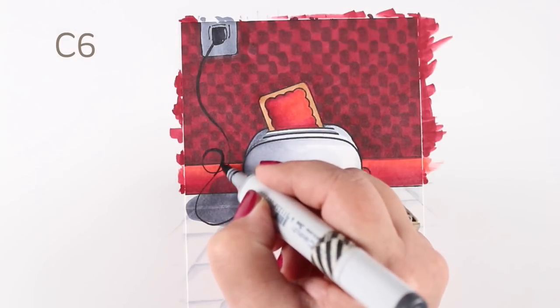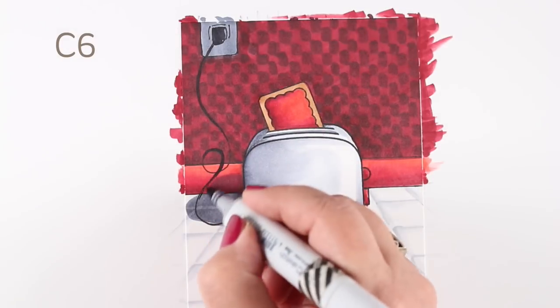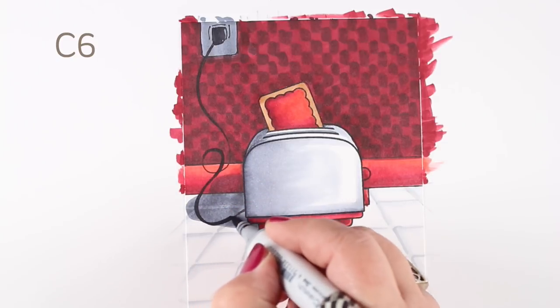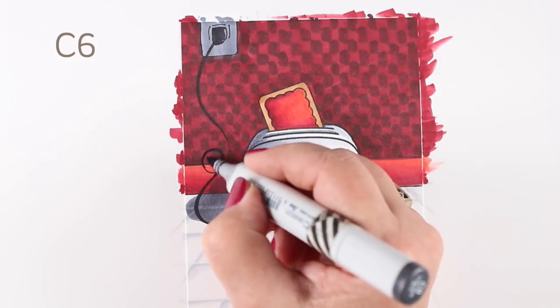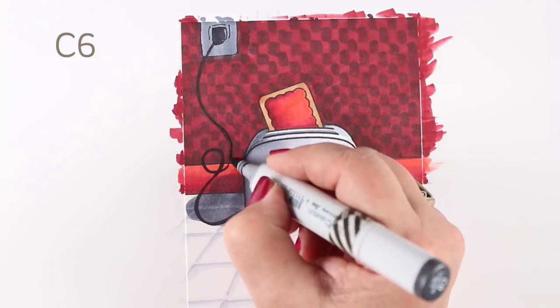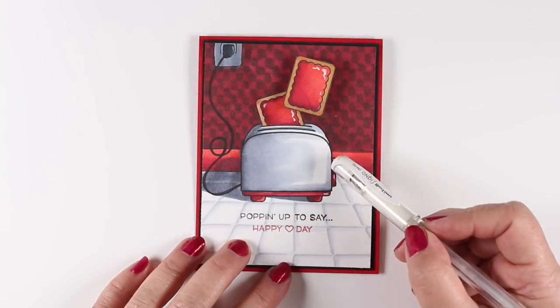And then just add a few details. Now that little cord and the plug I added myself, I just kind of sketched it in. Not really hard to make a little rectangle up there for the plug and then whatever kind of line you want.